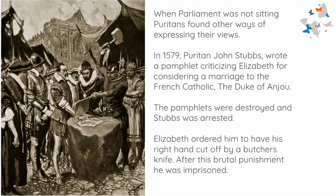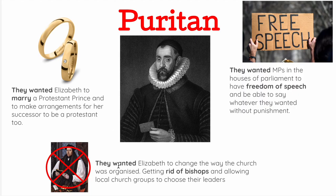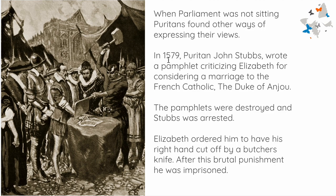When Parliament was not sitting, Puritans found other ways of expressing their views, since Parliament didn't come together very often. In 1579, Puritan John Stubbs wrote a pamphlet criticising Elizabeth for considering a marriage to a French Catholic, the Duke. These pamphlets were destroyed and Stubbs was arrested. Elizabeth ordered him to have his right hand cut off by a butcher's knife, as shown in this image. After this brutal punishment, he was then imprisoned. She acted quickly against the Puritan opposition — she did not want them to have freedom of speech or build an uprising.